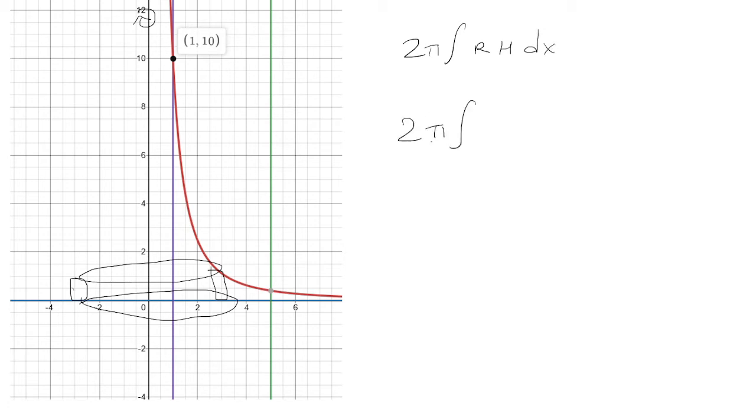So 2π, the bounds here are going from x equals 1 to x equals 5. The radius, well, at x equals 1, the radius is 1, because the center here is going to be the y-axis, which is 0.